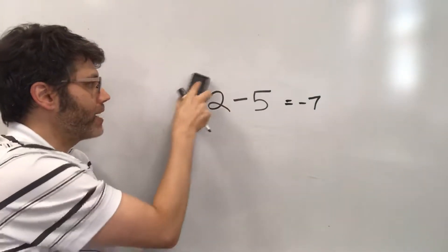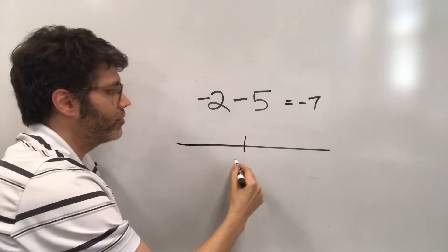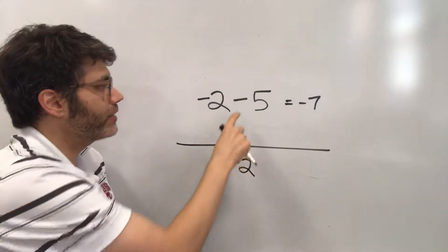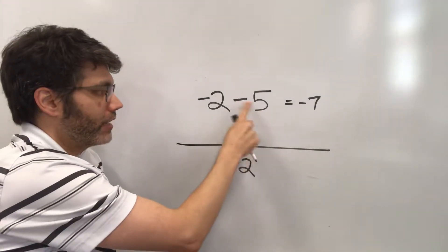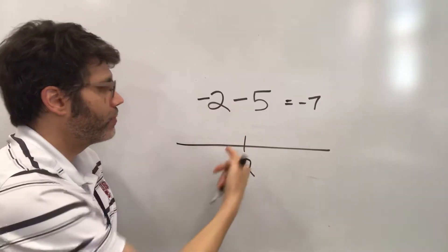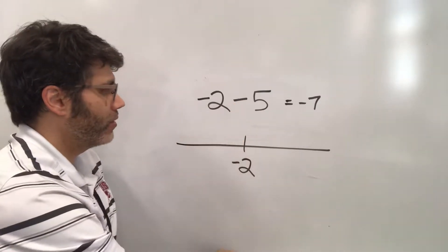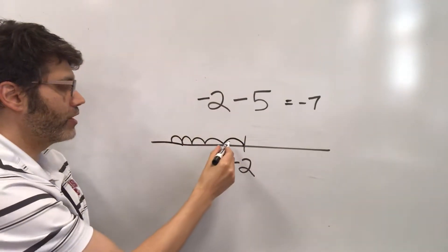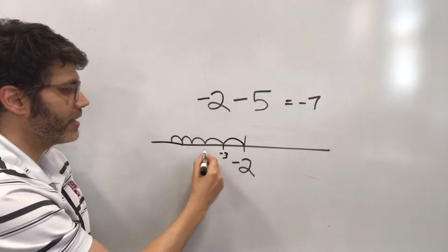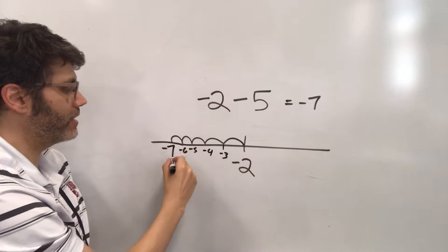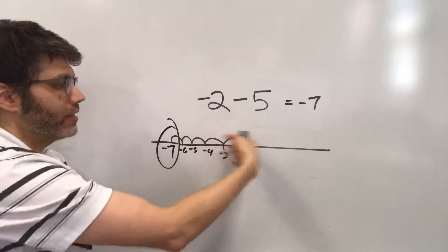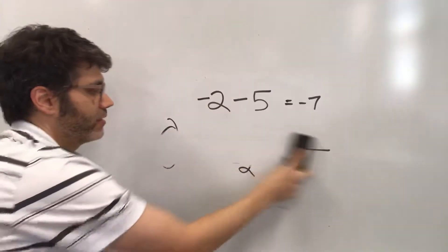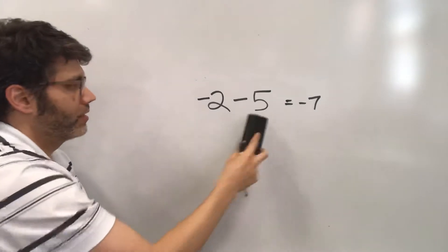Another way to think of it is on the number line. Let's say we were at negative 2 on the number line. Whenever you're subtracting a number, we're going to move to the left. We're going to move to the left 5 — 1, 2, 3, 4, 5 — landing on negative 3, negative 4, negative 5, negative 6, negative 7. So we're going to the left because we're subtracting 5, and that's why we get negative 7.